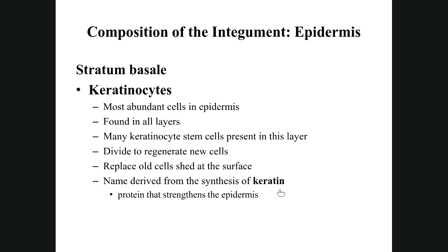Keratinocytes get their name because they make a lot of keratin. They make so much keratin that they end up killing themselves — they pack their cells full of keratin, destroy their organelles, and become just a membrane packed full of this waterproof, strong material. By the time they reach the stratum corneum, they're just dead, waterproof cells. At this point they're living, but as they move toward the top and away from blood vessels, they start to die.